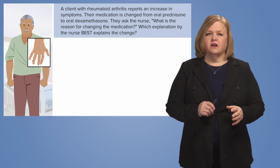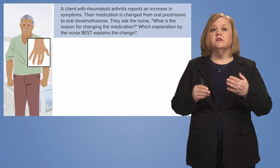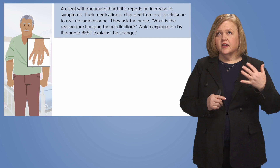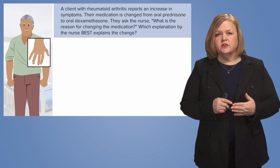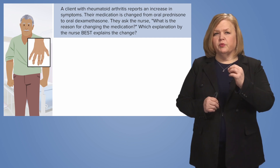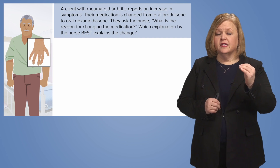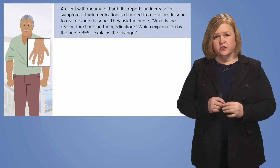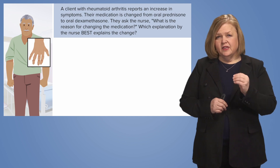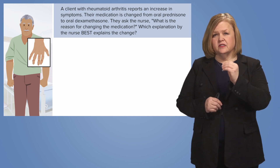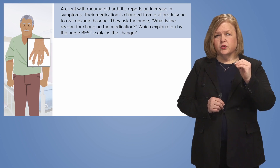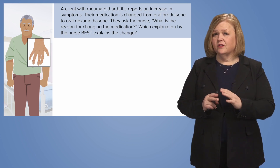Let's start back up at the top. So a client with — I've got a diagnosis — rheumatoid arthritis. I need to do a quick run-through of what the problems are for this patient. But then it says 'reports,' and I know that has to be really important. They have an increase in symptoms, and if they have an increase in rheumatoid arthritis symptoms, that is not what we want.